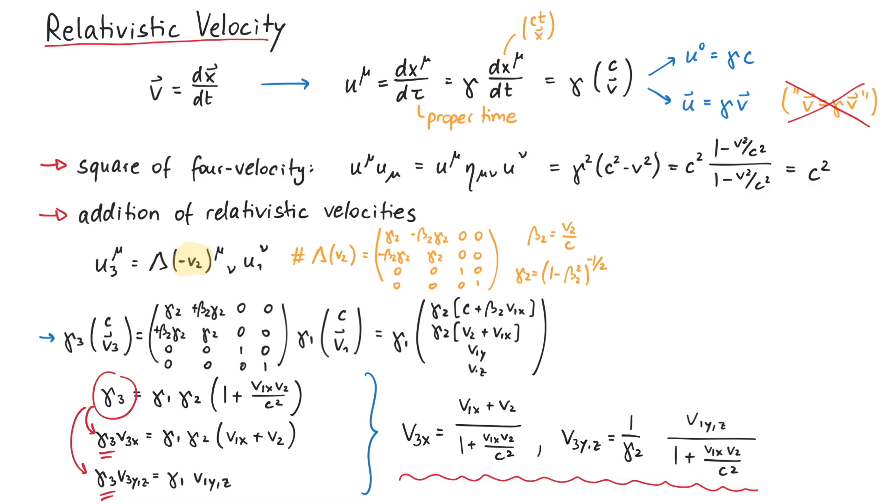You can check that if the particle already travels with the speed of light, the new velocity v3, as viewed from the new frame of reference, cannot be faster than the speed of light. And that's pretty much it for this video. Thanks for watching!